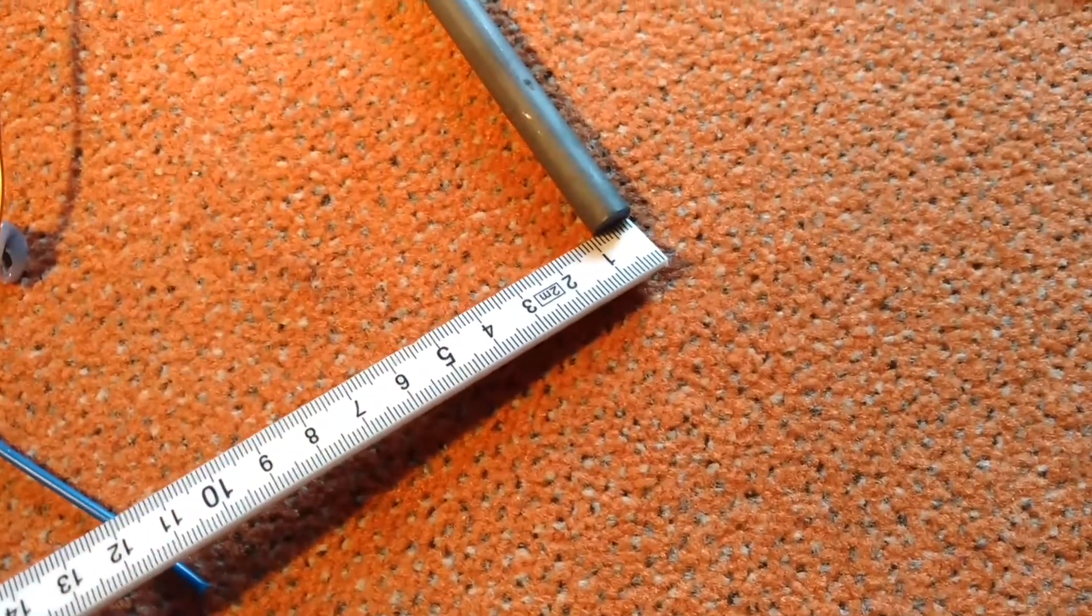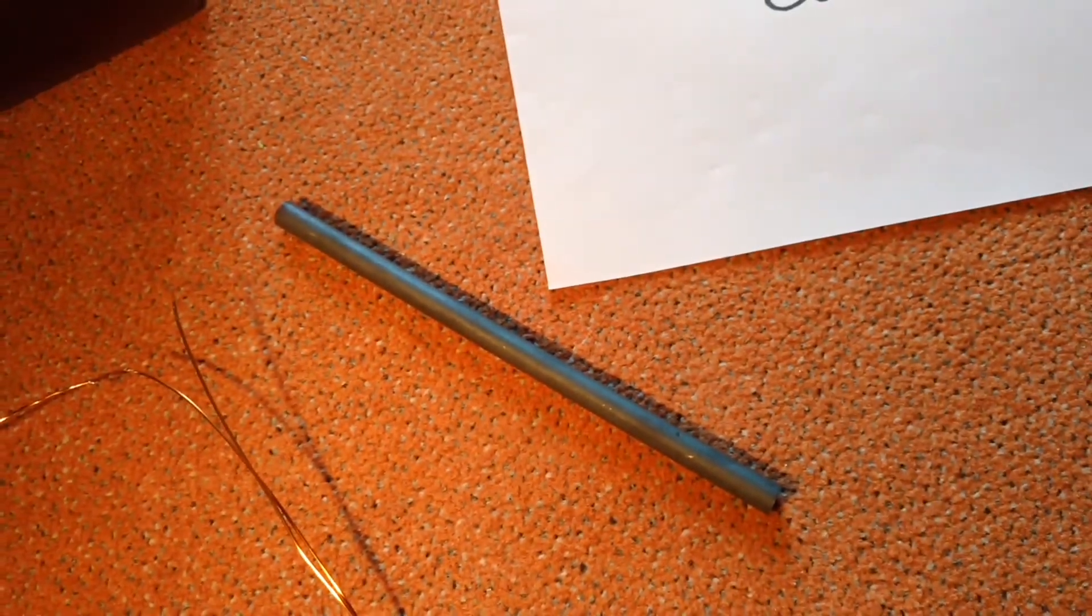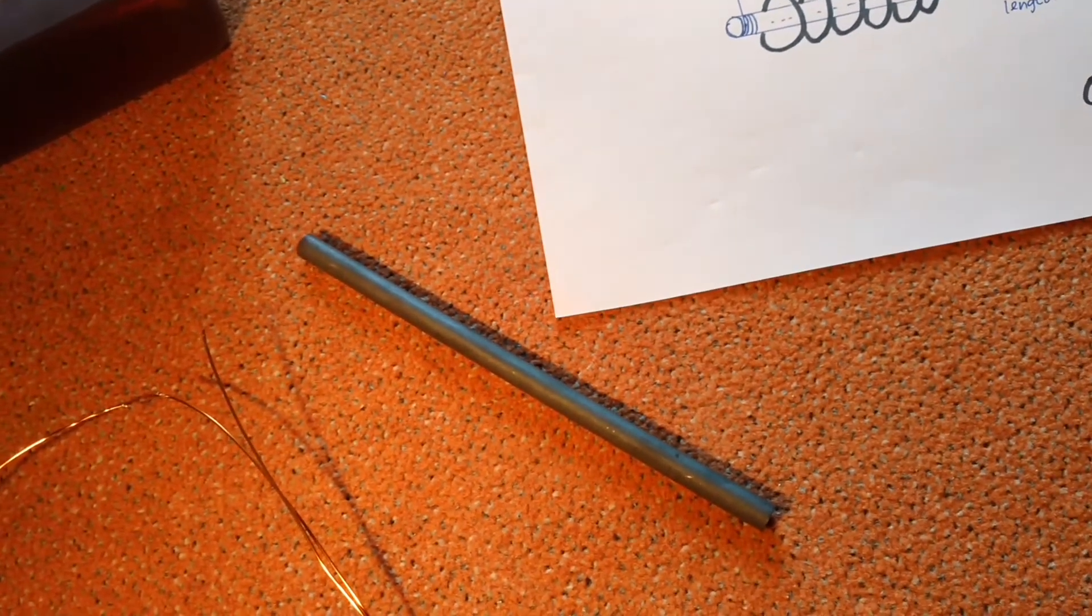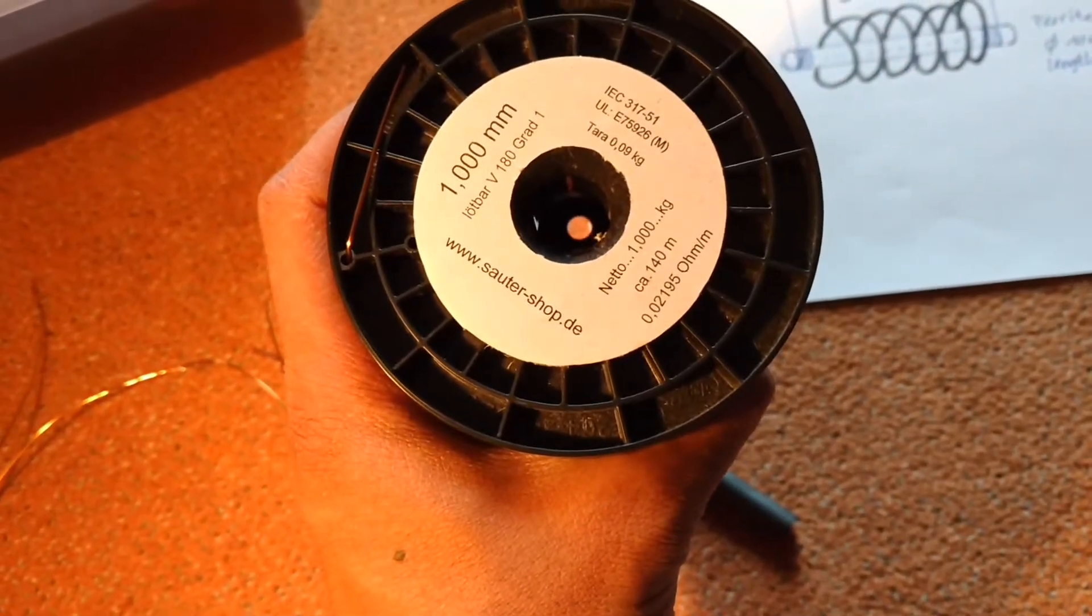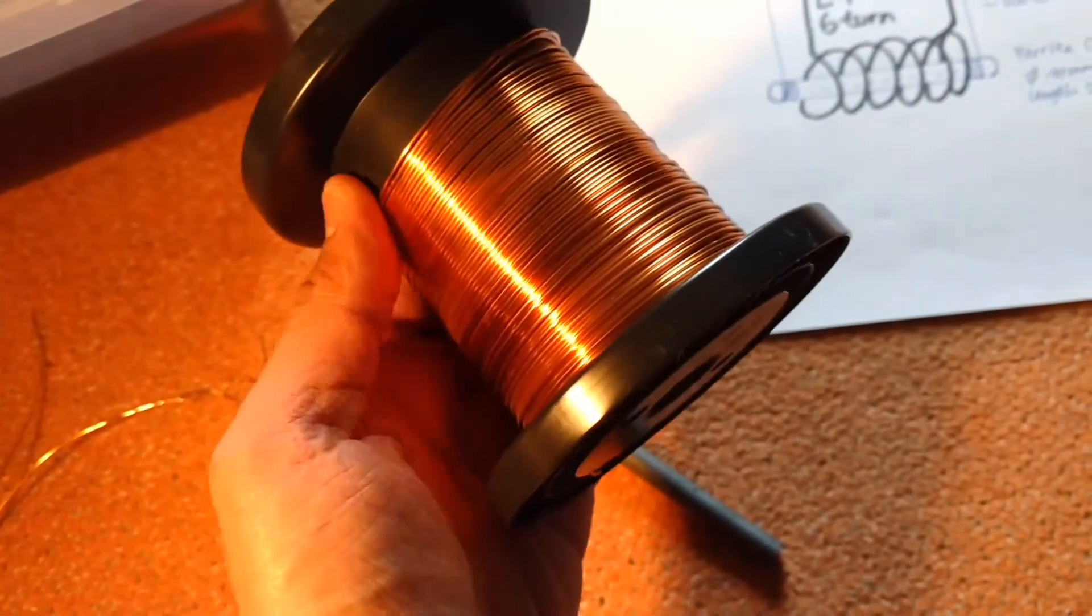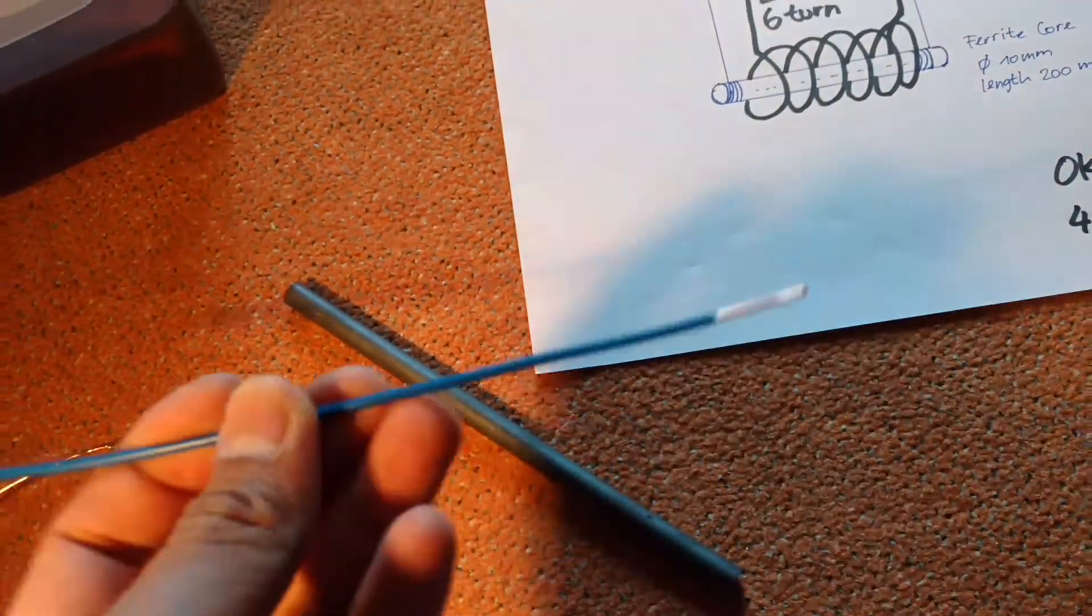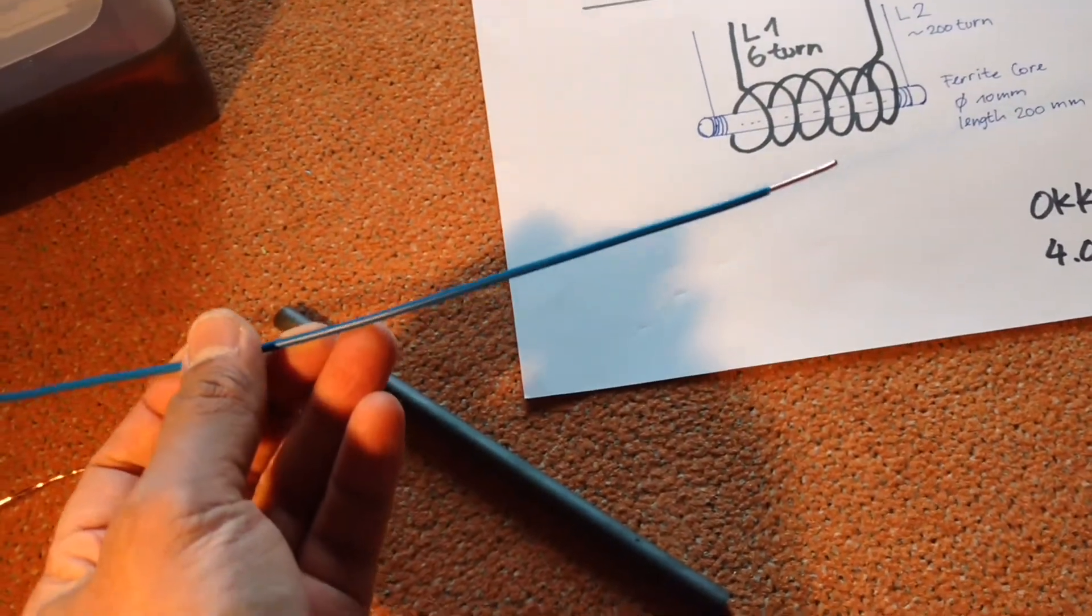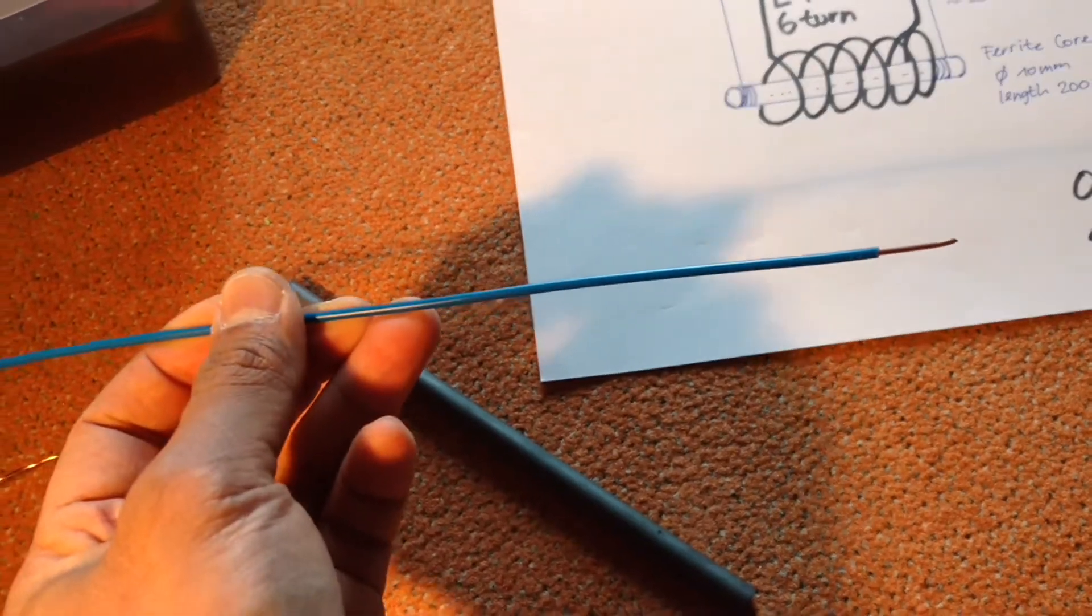And for the L2 coil I use this magnet wire, one millimeter magnet wire. Looks like this.